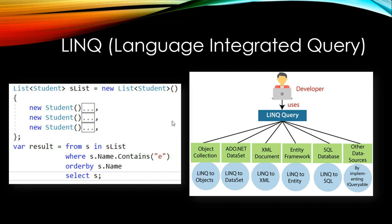Unlike SQL, where a query is executed on the SQL engine and you don't know at design time whether the query will be successful or have syntax errors, with LINQ you know at design time how to write the query. Because it uses C# language constructs, for example a name property of type string gives you all string methods available, helping you filter results in a very flexible way.